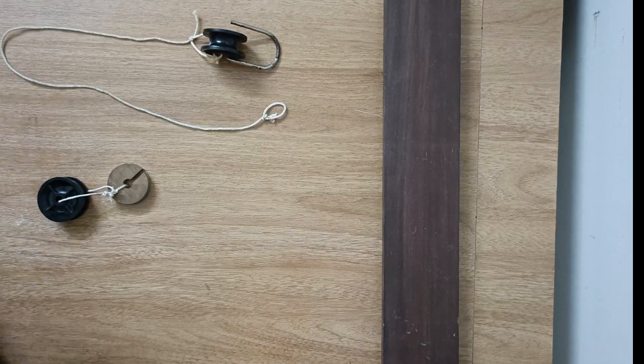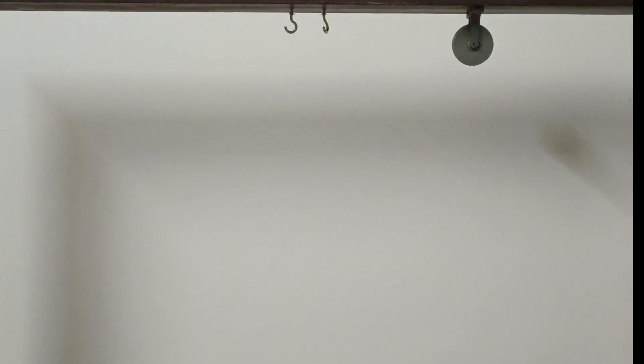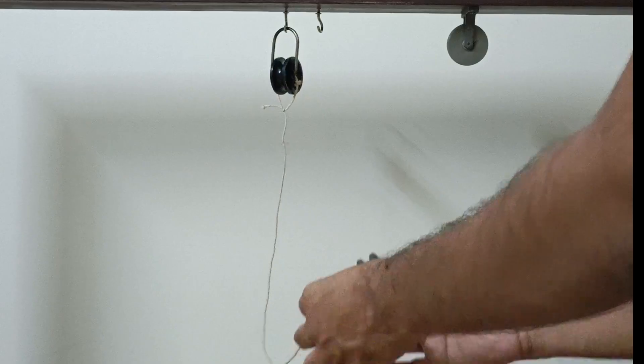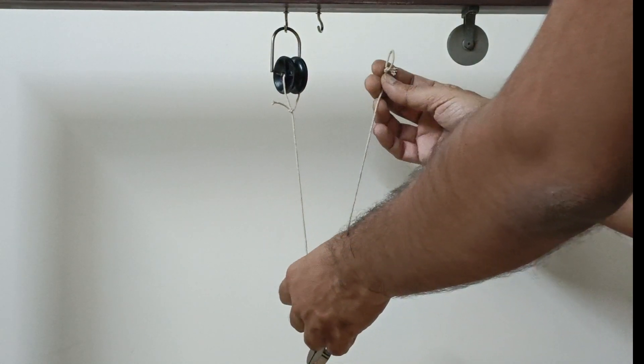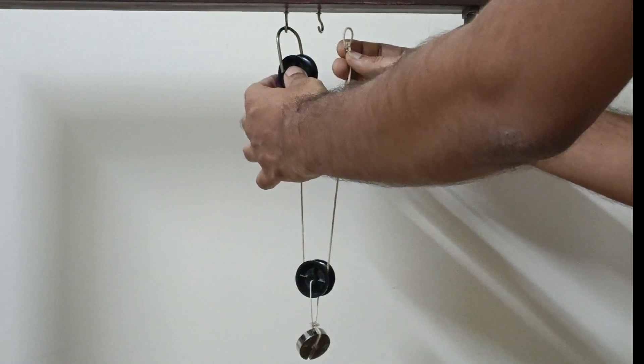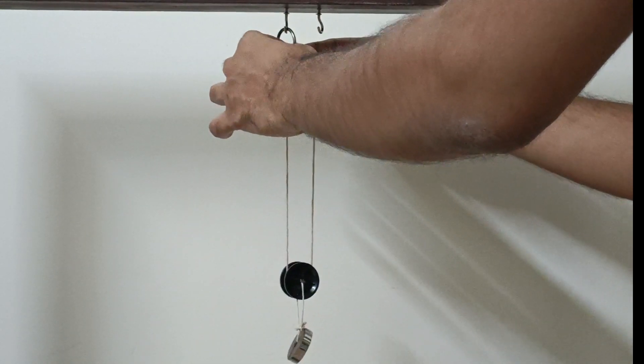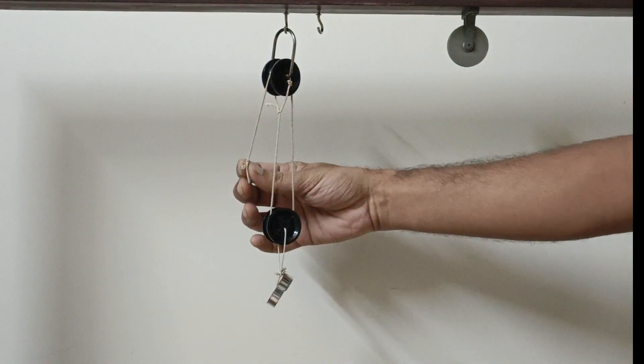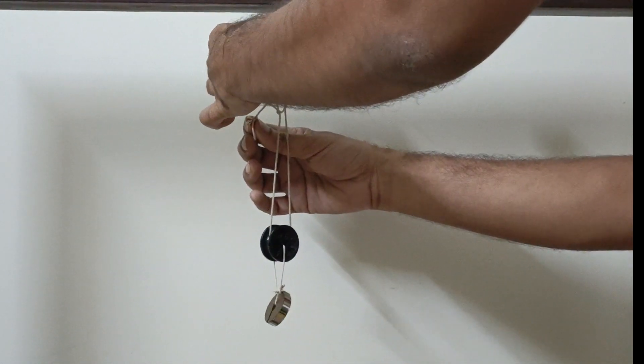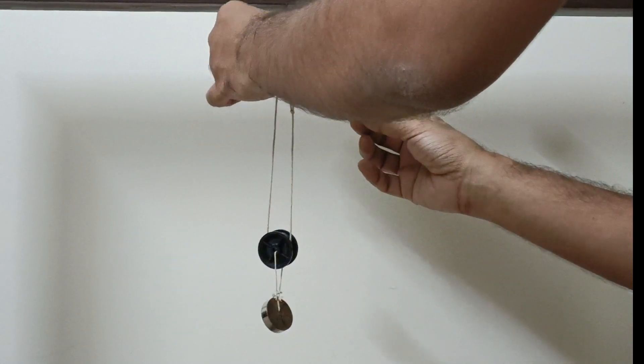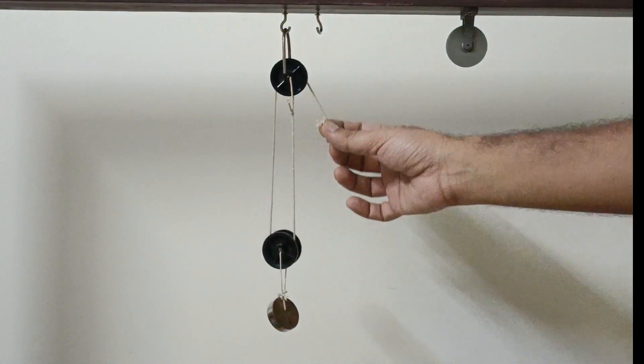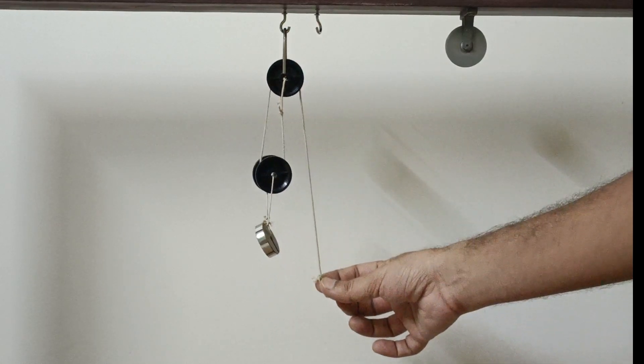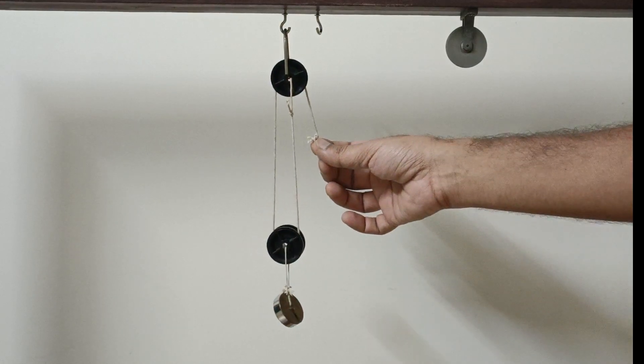Pass the rope as shown to make the block and tackle system. Hang the pulley with the hook as shown. Now watch carefully how I make the connection between the tackle and the block. It's very evident from here that the effort point moves twice the distance as that of the load point, so the velocity ratio is two.